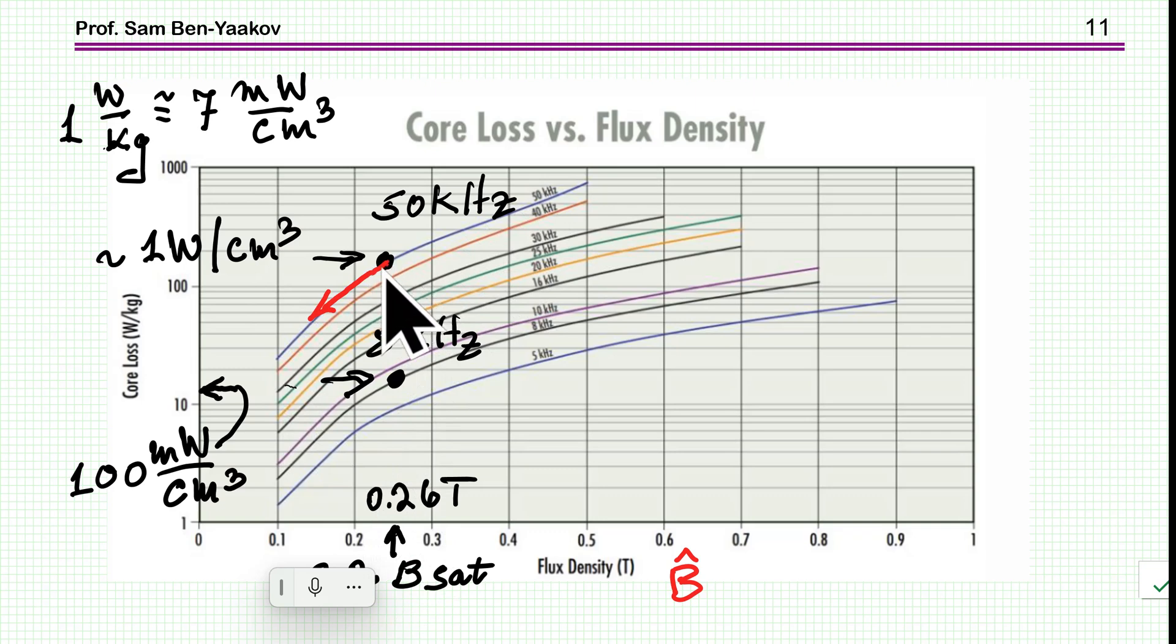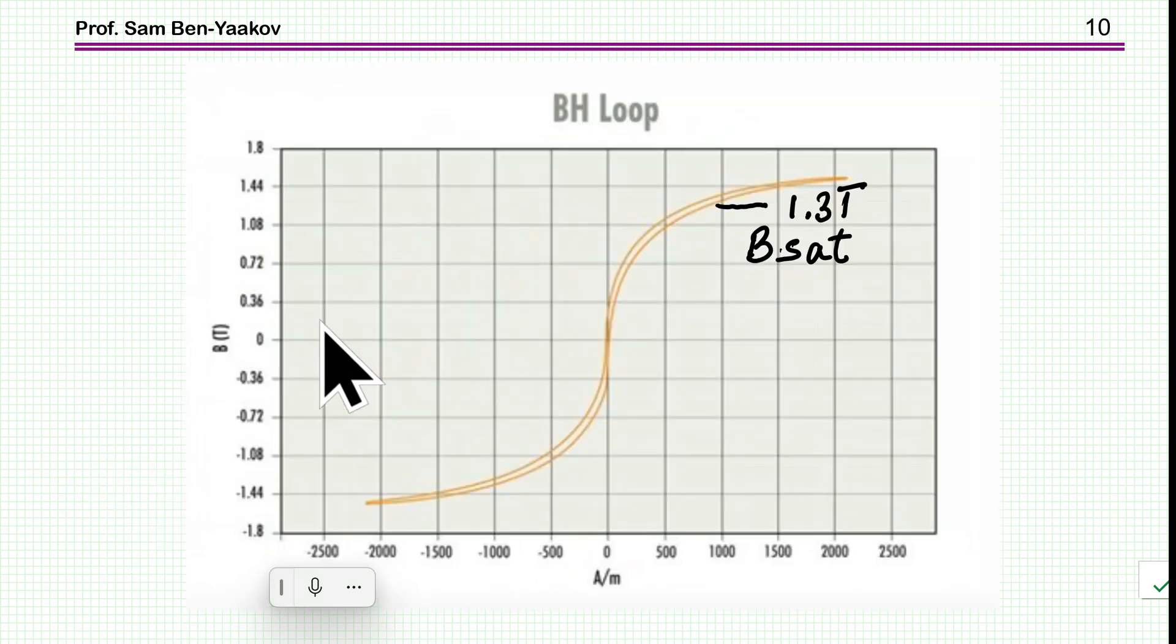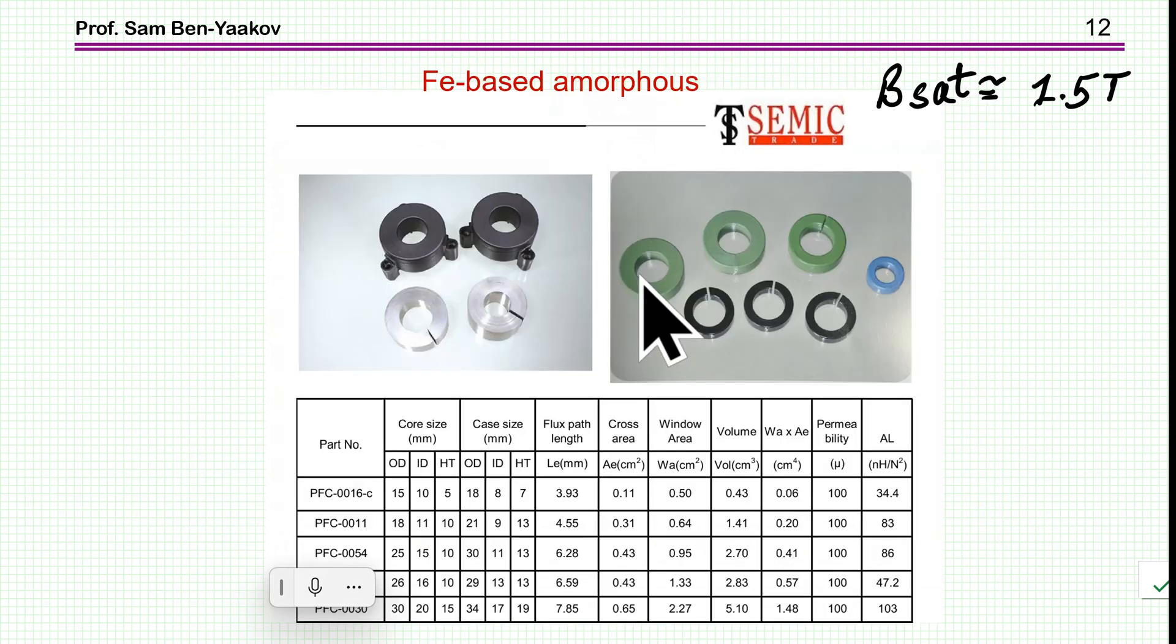Of course, we can go to a lower B ripple. We can go to this point here, and the losses will be lower. But then, if this is 0.2 of the maximum, the maximum will be much lower. And we are not actually using the fact that we have a high saturation level. We'll be only here, which is not using the fact that this material has a very high saturation level. As I've said, the magnetic material is a fairly old material.